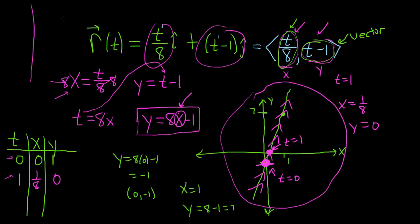For example, if t equals 0 was up here, and t equals 1 was down here, then it would be going the other way. So that would have been different. I hope this video has been helpful.